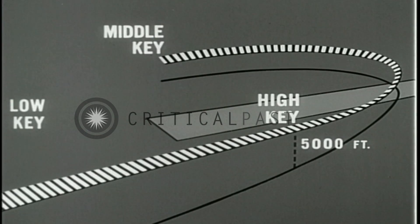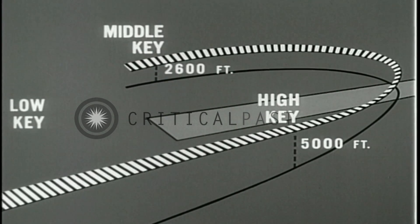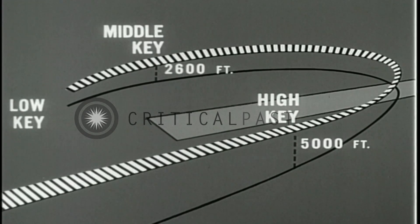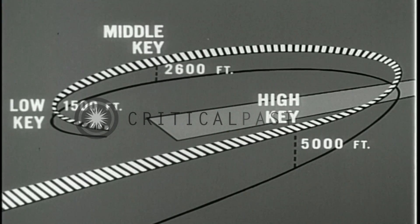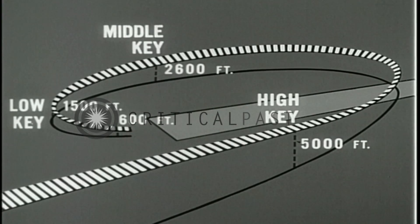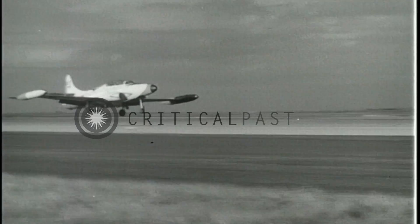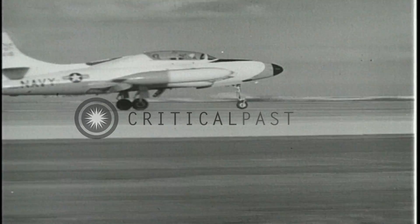Pass over the middle key on your downwind leg at an altitude of 2,600 feet. Decrease altitude to pass over the low key at 1,500 feet. Try to reach the straightaway with a minimum of 600 feet. Touch down at about 120 knots. As in normal landings, retract flaps when the nose wheel touches down to reduce lift and increase traction for braking.